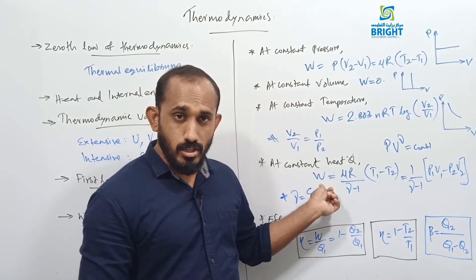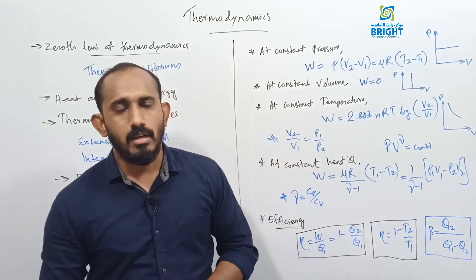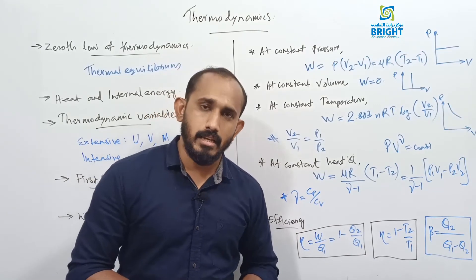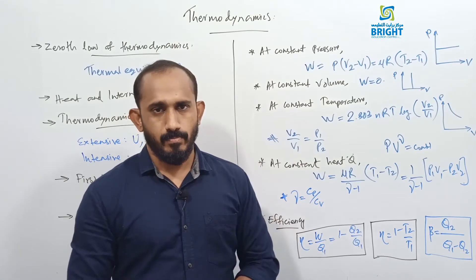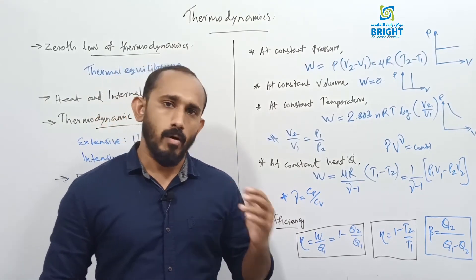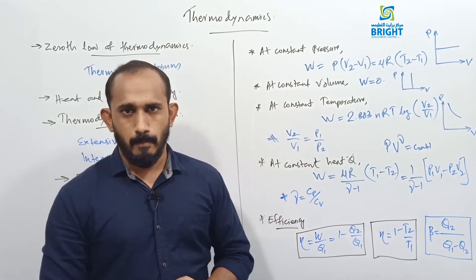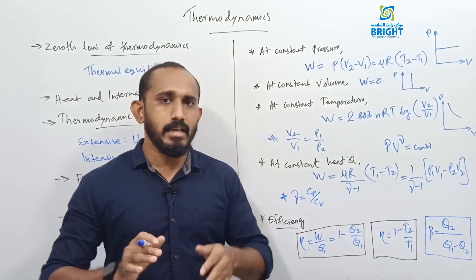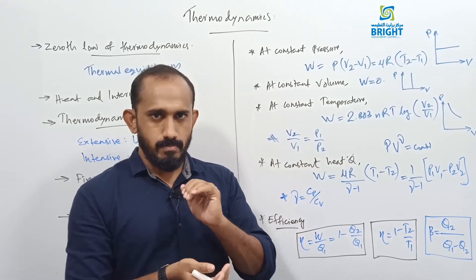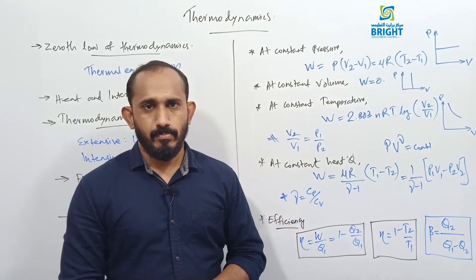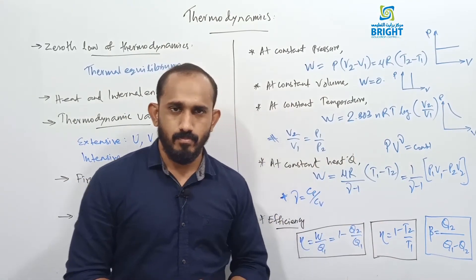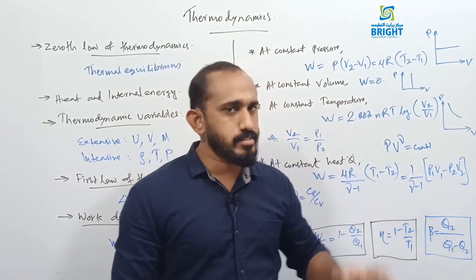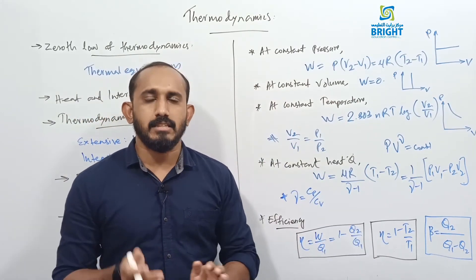In an adiabatic expansion, if W is positive, T1 > T2, meaning temperature decreases — the system cools. In adiabatic compression, the temperature increases — the system becomes hotter. This is because during an adiabatic process, the system works using its own stored internal energy without receiving any heat from outside. The P-V diagram for adiabatic process is steeper than that of an isothermal process.